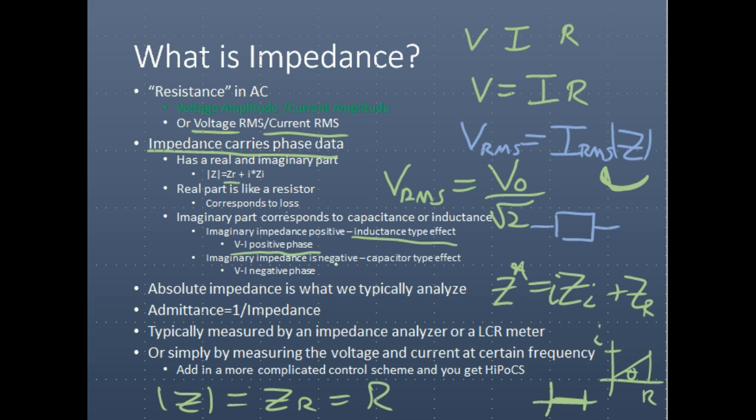We can calculate an absolute impedance and we can also calculate a phase. However, absolute impedance mainly for piezoelectric materials is what we're going to be analyzing and considering in most detail. You can also consider the admittance, which is one over the impedance, denoted by Y. It'll also have a phase, a real part, and an imaginary part, and can be analyzed in much the same way.